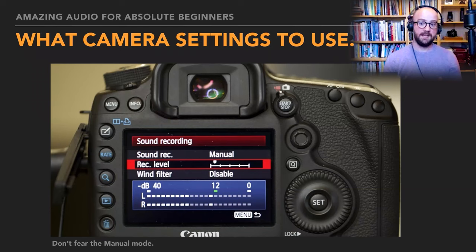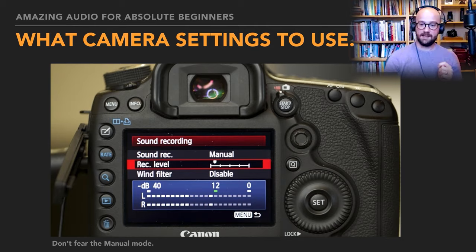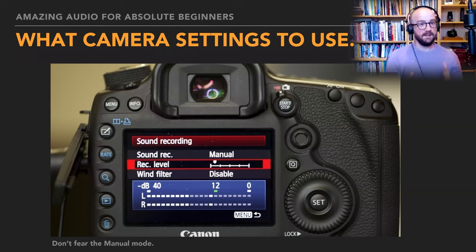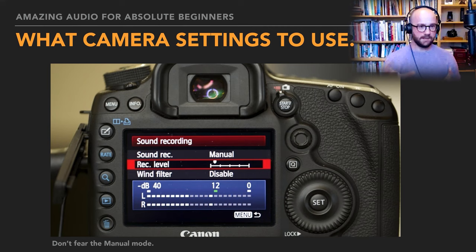Setting it to manual means you have to set the recording level — the input sensitivity of the camera. It's the same thing as the settings on the back of the microphone, but the camera variant with many more notches. It's just like when you film with manual lenses and have to focus and adjust the iris — this is one thing you do have to do. But the process is very simple.